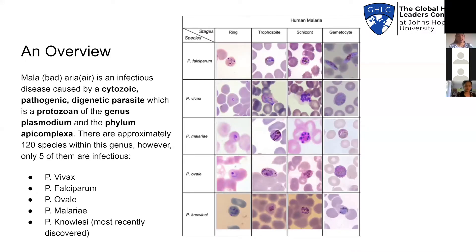Malaria comes from two Latin terms, mala and area, which means bad air. It's caused by a protozoan parasite that belongs to the genus Plasmodium and the phylum Apicomplexa. There are approximately 120 species in this genus; however, only five of them actually cause infections to humans.